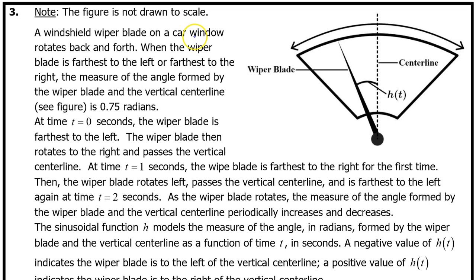A windshield wiper blade on a car window rotates back and forth. When the wiper blade is farthest to the left or farthest to the right, the measure of the angle formed by the wiper blade and the vertical center line — see the figure — is 0.75 radians. At time t equals 0 seconds, the wiper blade is farthest to the left. The wiper blade then rotates to the right and passes the vertical center line. At time t equals 1 second, the wiper blade is farthest to the right for the first time. Then the wiper blade rotates left, passes the vertical center line, and is farthest to the left again at time t equals 2 seconds.